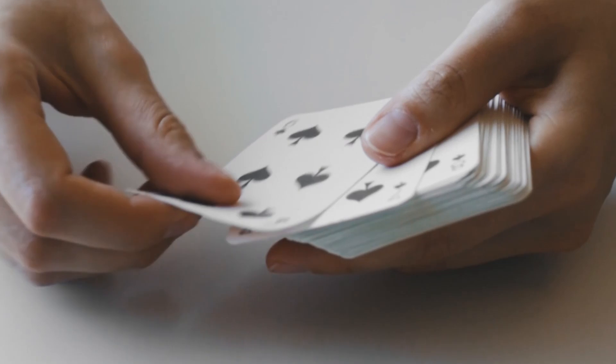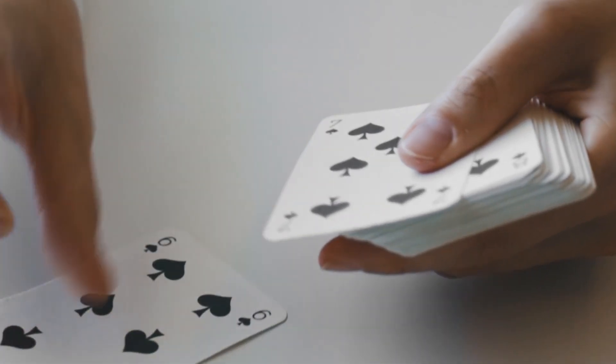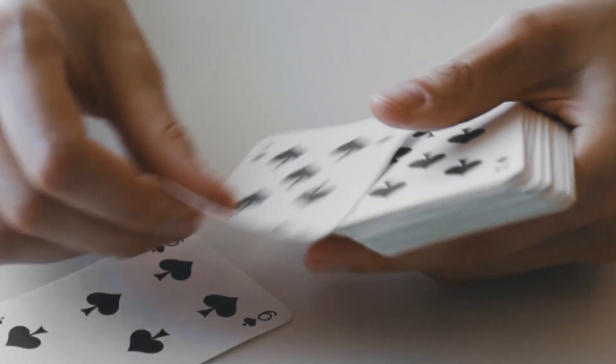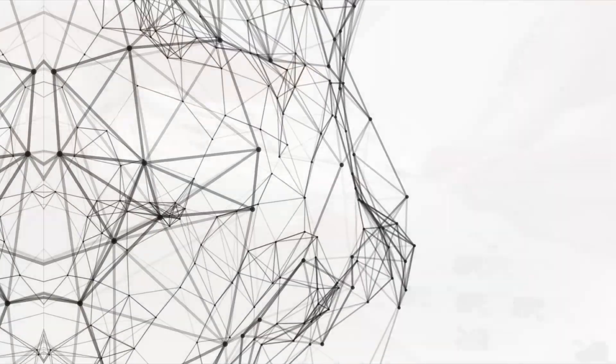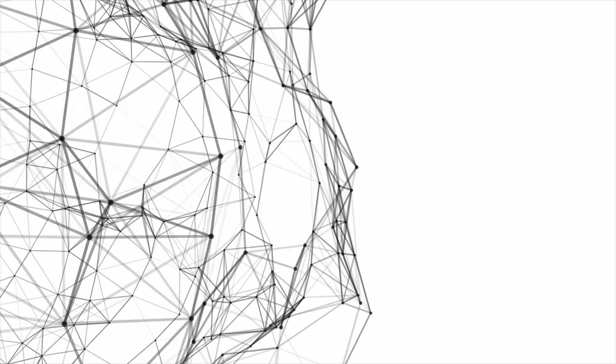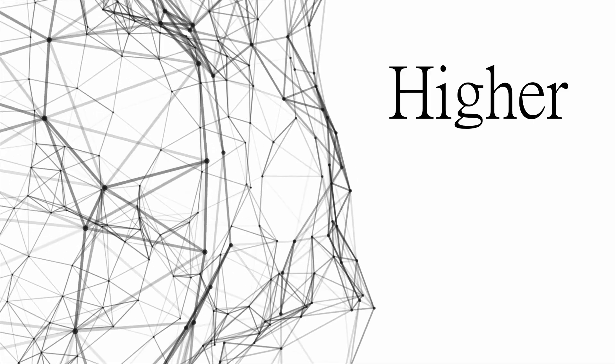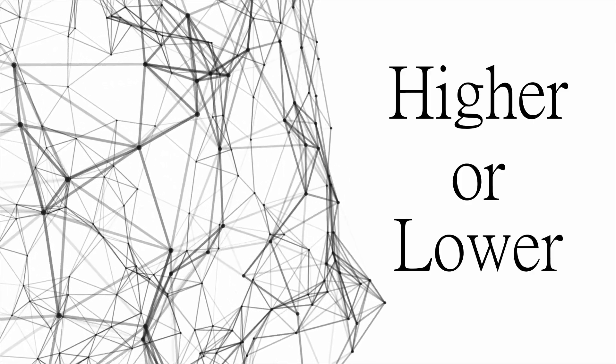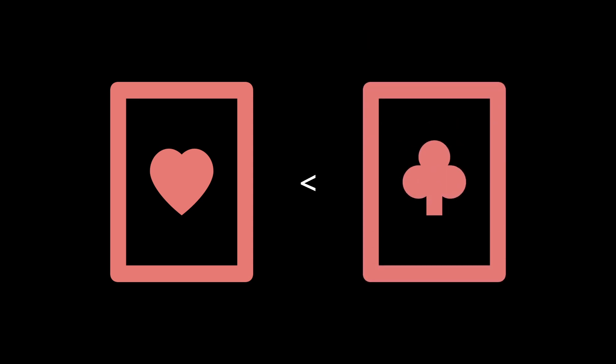To get started, I thought that this game would be a card game, and probably the easiest card game to code is Higher or Lower. You draw a card from the deck and you need to guess if the next card is higher or lower than the first card.